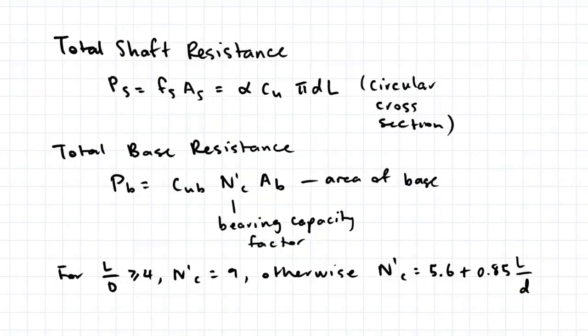So the total shaft resistance can be written in this form. If the pile has a circular cross sectional area, then the area of the shaft is given by these terms here.